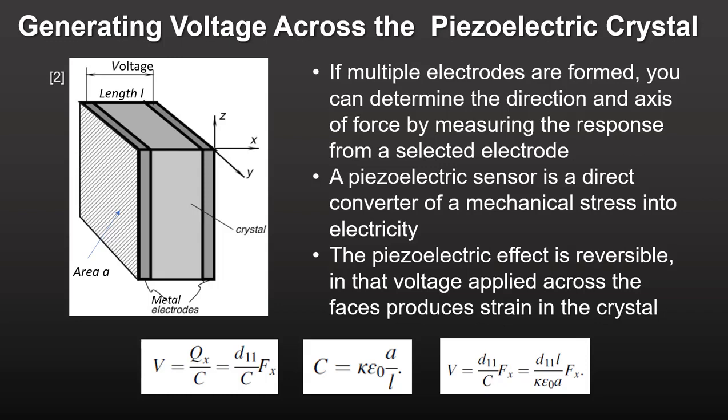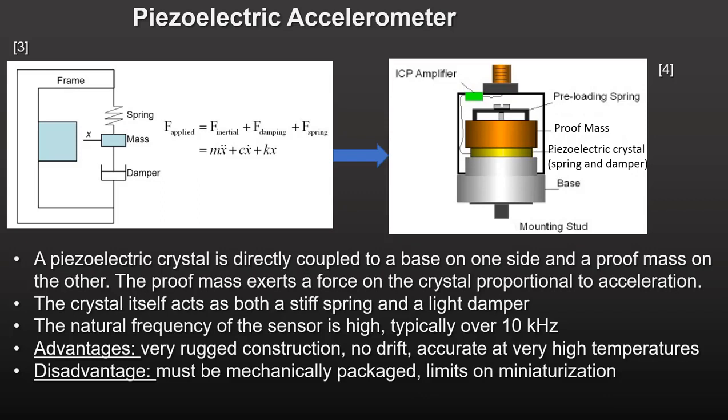A piezoelectric sensor is a direct converter of mechanical stress into electricity. The piezoelectric effect is reversible, and a voltage applied across the face produces mechanical stress in the crystal. Looking at the simple equations that describe the piezoelectric voltage: the constant d11 represents the charge output along the x-axis for a force along the x-axis, with units of coulombs per newton. The voltage is the charge q divided by the capacitance c. When you combine equations, you see that the voltage output on the electrodes is directly proportional to the force fx along the x-axis of the crystal.